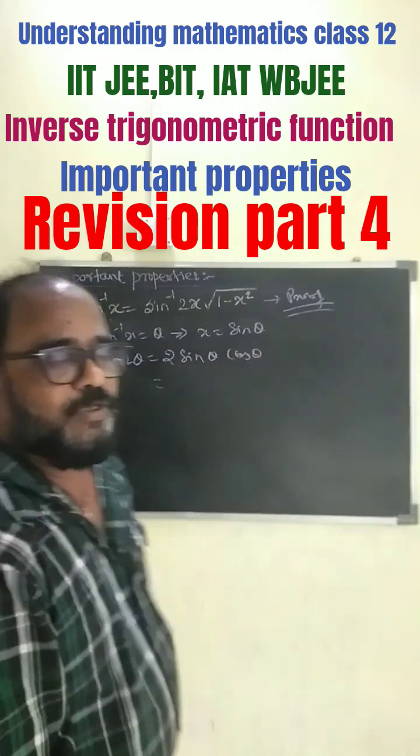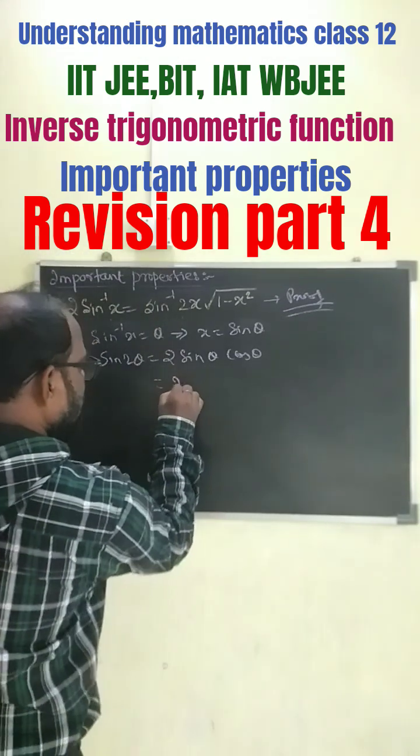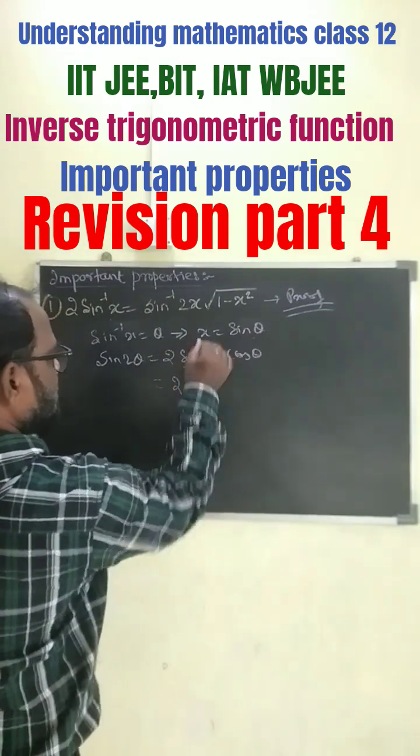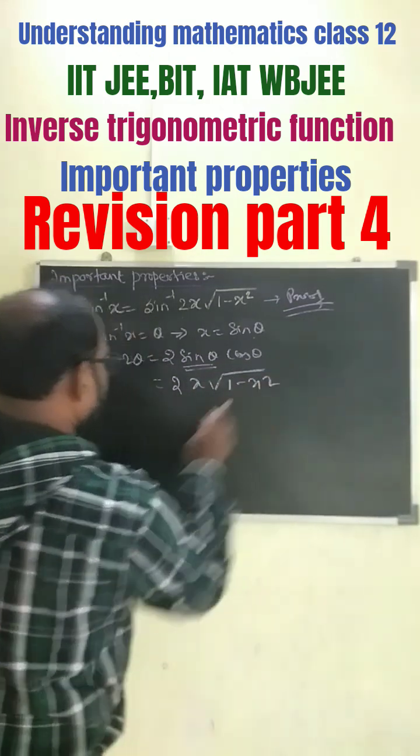We know that cos θ equals √(1-x²), 1 minus sine square. So we can write here 2 sin θ means x into √(1-x²).